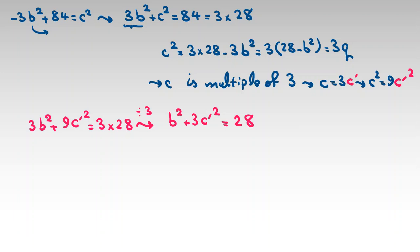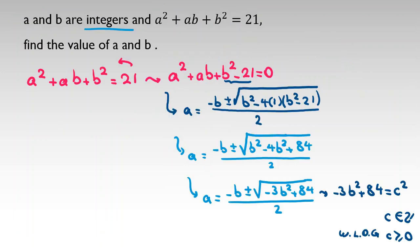Now I check the integer cases for c′ ≥ 0. For c′ = 1: b squared = 28 minus 3 = 25, so b = ±5. For c′ = 2: b squared = 28 minus 12 = 16, so b = ±4. For c′ = 3: b squared = 28 minus 27 = 1, so b = ±1.